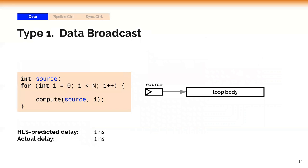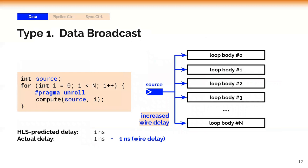Data broadcasts are usually hidden in the user code. For example, when we unroll a loop, some variables may be used by every instance of the unroll loop body. Such broadcasts will lead to additional wire delay, which is not captured by the delay estimation model of HLS. As a result, the scheduling may be interfered and the result may be sub-optimum.